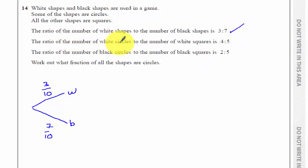The ratio of the number of white circles to the number of white squares. So from the white shapes, I can have circles or squares. Four ninths of the white shapes are circles. And five ninths are squares.